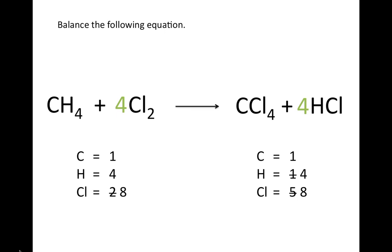I chose to add four as the coefficient in front of Cl2 because each molecule of Cl2 has two chlorine atoms, so four molecules of Cl2 gives a total of eight chlorine atoms — found by multiplying four times two. Now that we have the same number of each type of atom on the left side and the right side of our reaction arrow, we can consider this reaction correctly balanced.